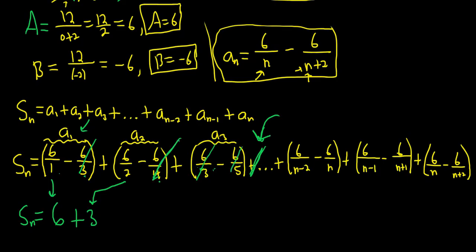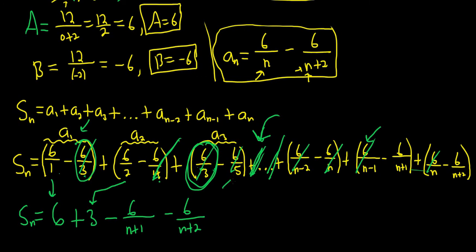We know that this one cancels with something over here. This one cancels with this. This one should cancel with something over here, which we don't see. And then this one, these last two here, don't cancel. So we have minus 6 over n plus 1. Minus 6 over n plus 2. Because the only pattern we determined was, well, one pattern, was that this one cancels the one 2 before it at the end. So the 6 over 5 is still there, you see. That's why we're still stuck with these. Okay, we're still stuck with these.